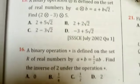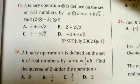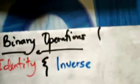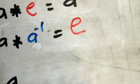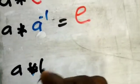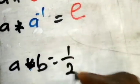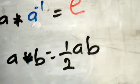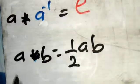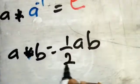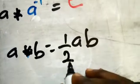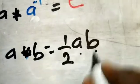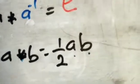We have been asked to find the inverse of 2 under the operation star. The operation is defined as: a★b = (1/2) × a × b. This is how the two elements are combined under this operation.